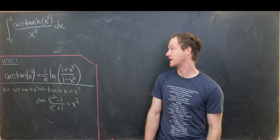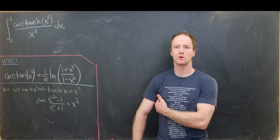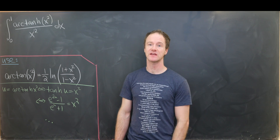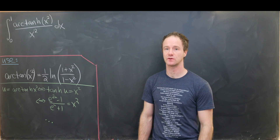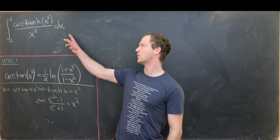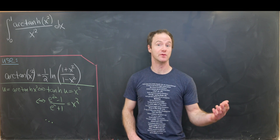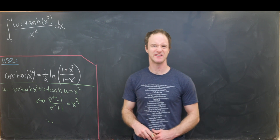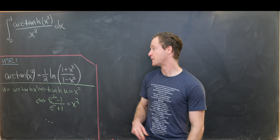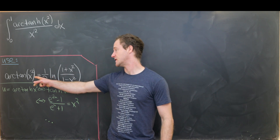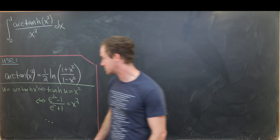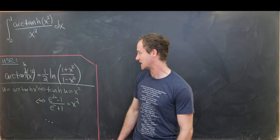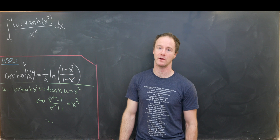Here we have a nice integral from our favorite integral suggestor. Our goal is to determine the integral from 0 to 1 of the inverse hyperbolic tangent of x squared over x squared. We're going to immediately change the form of this to involve logarithms instead of the inverse hyperbolic tangent — though writing it this way is a bit prettier. We'll use the identity: the inverse hyperbolic tangent of x squared equals one half times the natural log of (1 + x²)/(1 − x²).